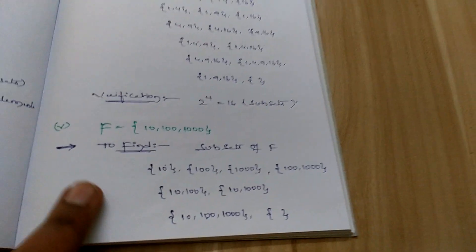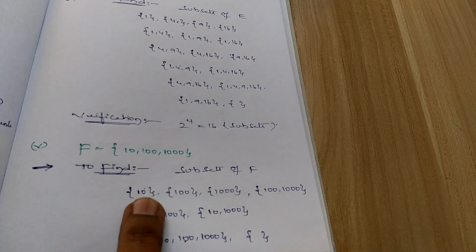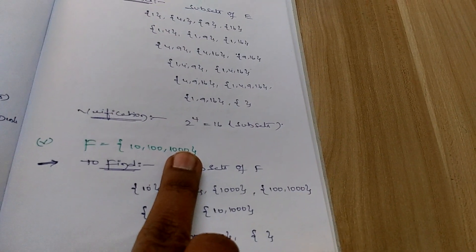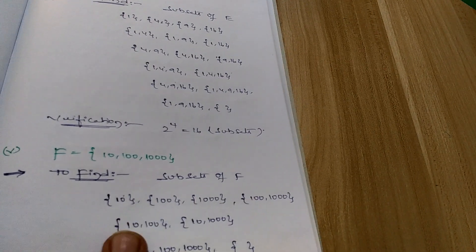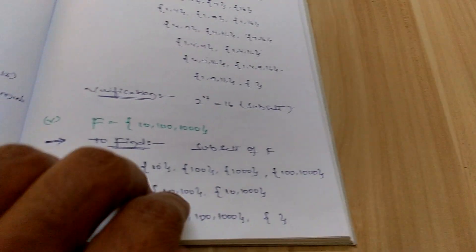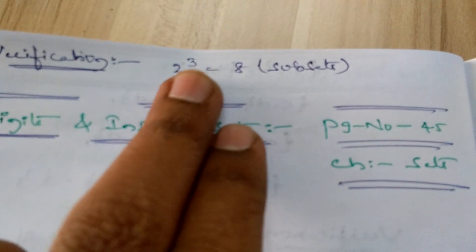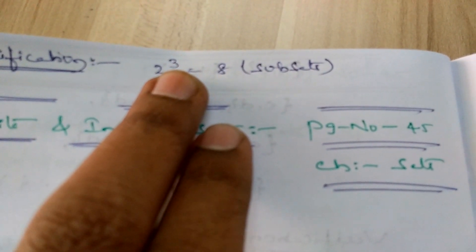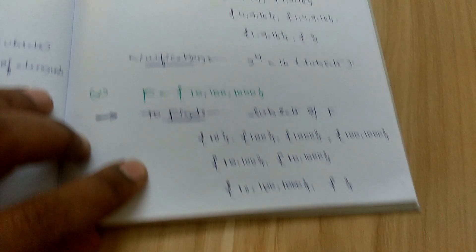Coming to the last one, the fifth one. We have to find the subsets for the given set. They give three elements, so you should get 8 subsets: {1}, {10}, {100}, {1000}, {1,10}, {1,100}, {1,1000}, {10,100}, {10,1000}, {100,1000}, and the given set {1,10,100,1000}, and the null set. This is the verification: 2^3, the base is 2 and the power is 3 that indicates the number of elements in the given set. We got 8 subsets total.